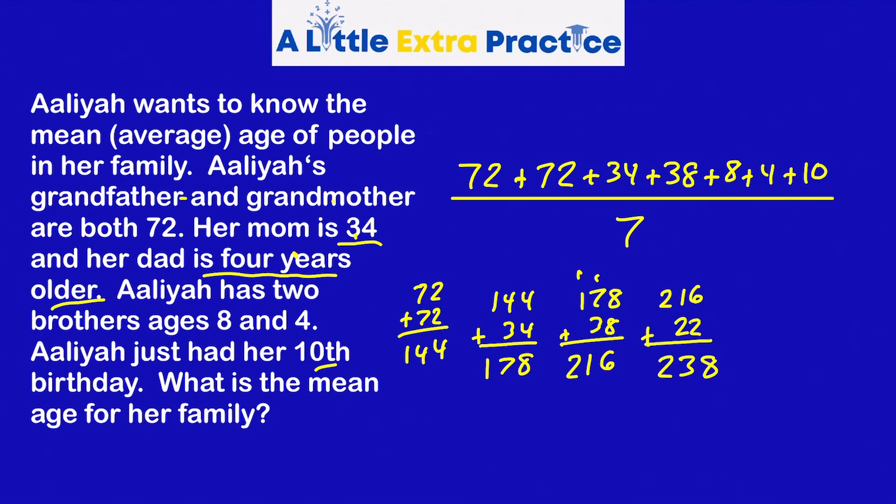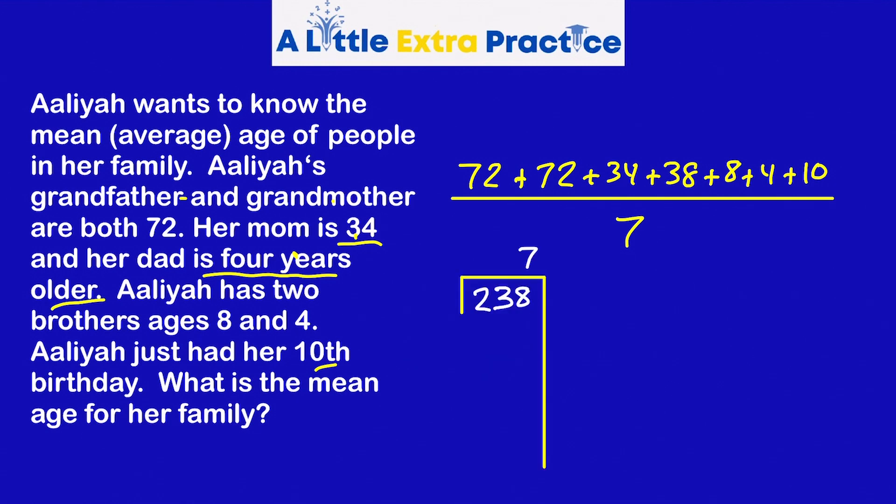The sum of their ages is 238. Next step, take 238, divide by seven. Using the partial product method, I'll divide 238 by seven. Seven times 30 would be 210. Subtract. 28. Seven times four is 28. And we have our answer. The mean age is 34.